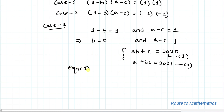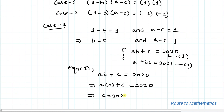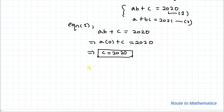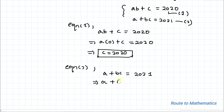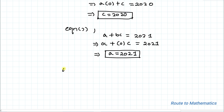From equation 1, AB plus C equals 2020. Substituting B equals 0: A times 0 plus C equals 2020, so C equals 2020. From equation 2, A plus BC equals 2021. Substituting B equals 0: A plus 0 equals 2021, so A equals 2021.